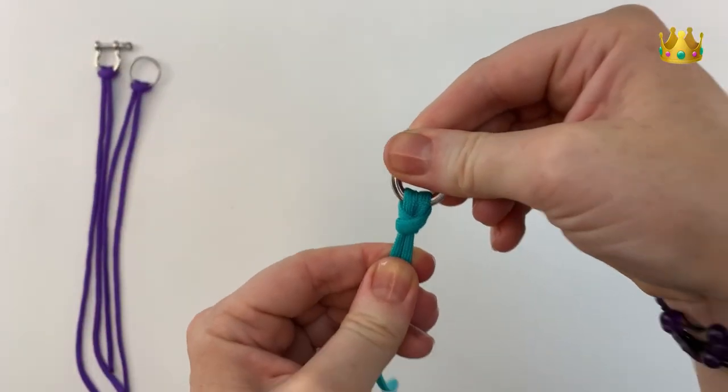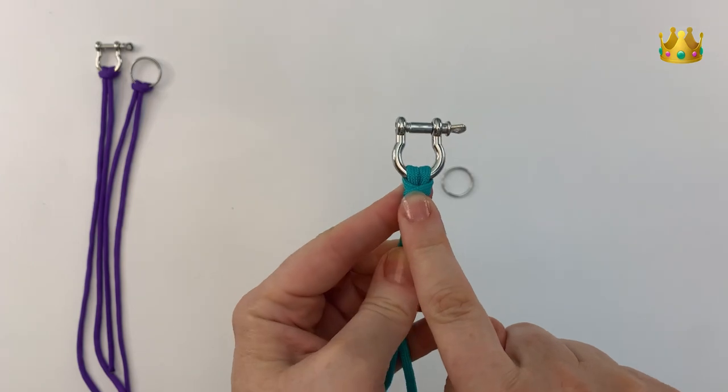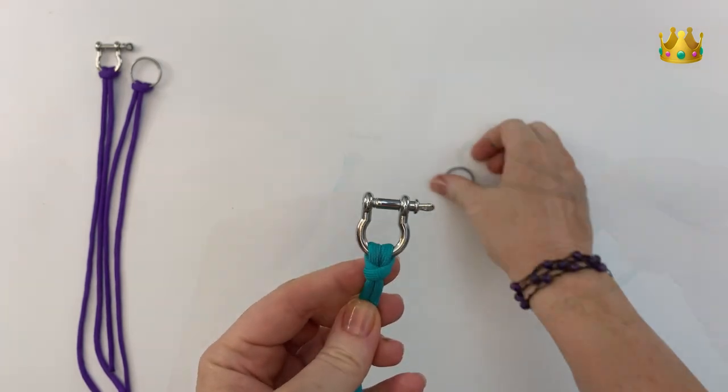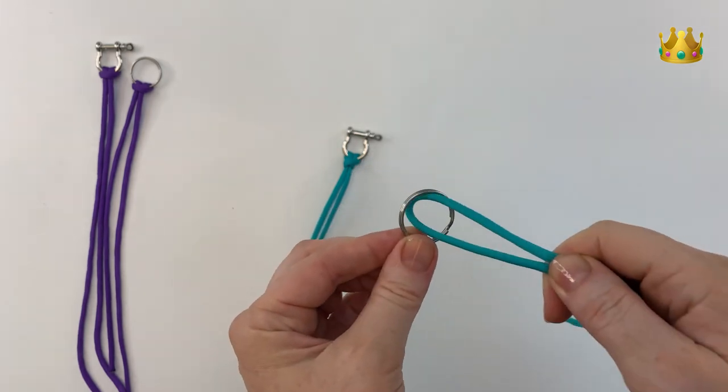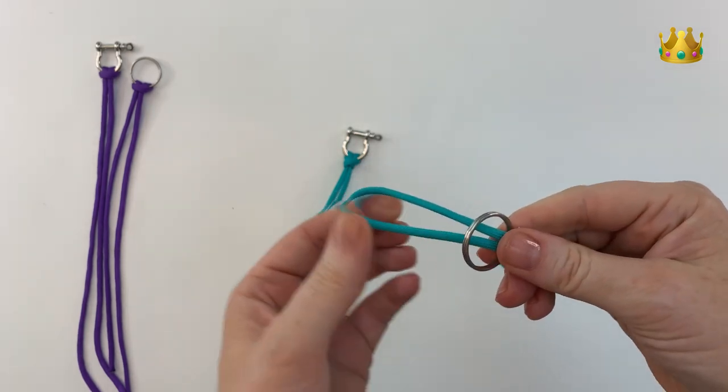Now onto the bull hitch. It's another really secure knot and it has a cross on the front here. So making a loop in your cord and placing the loop down through your key ring.